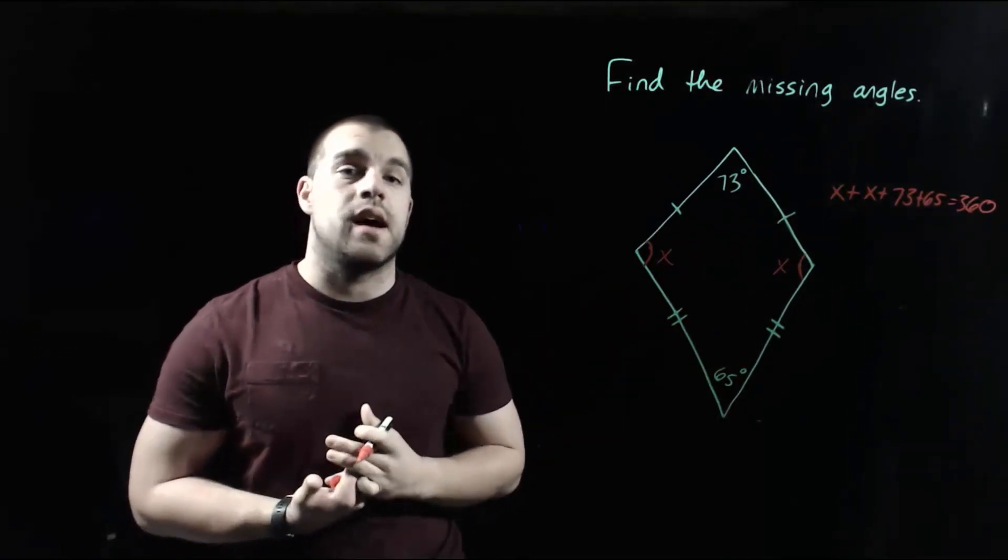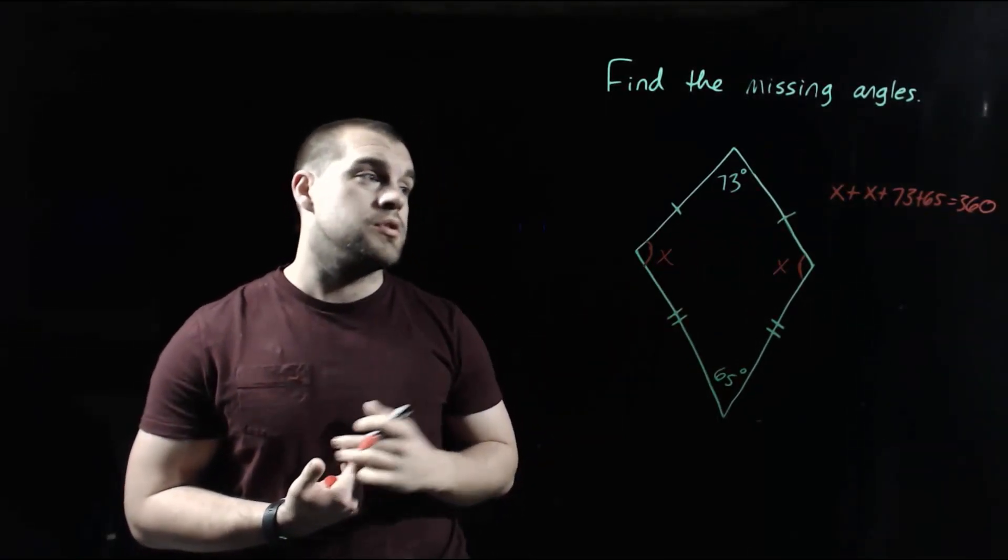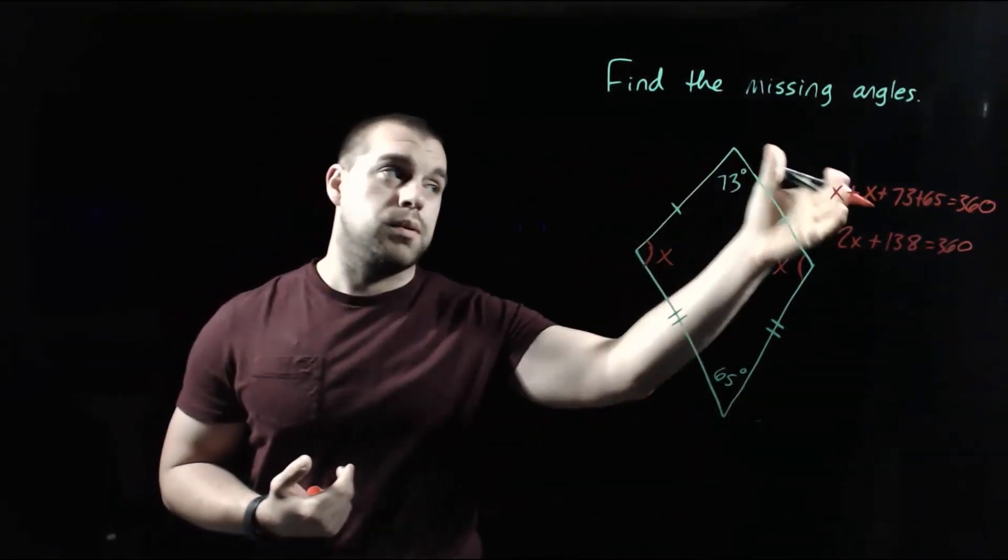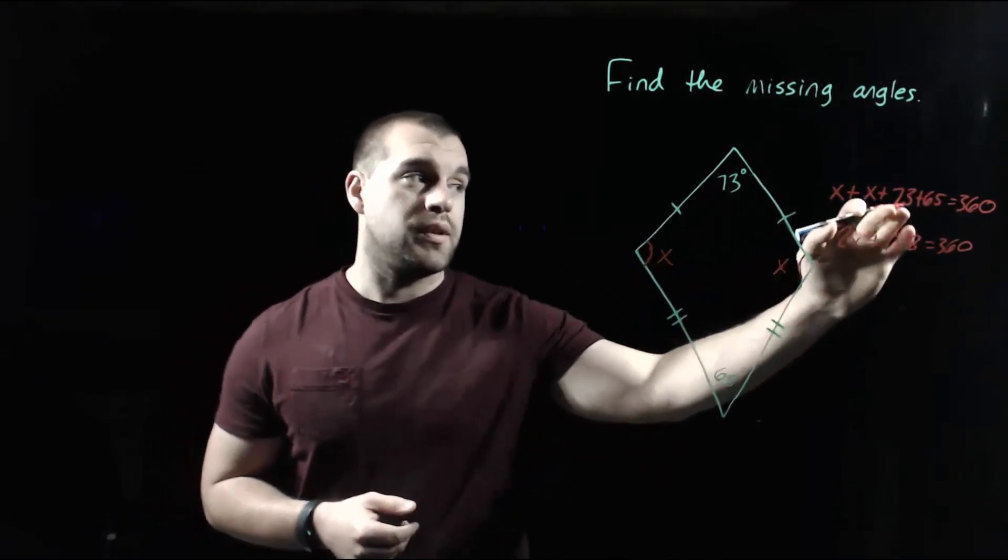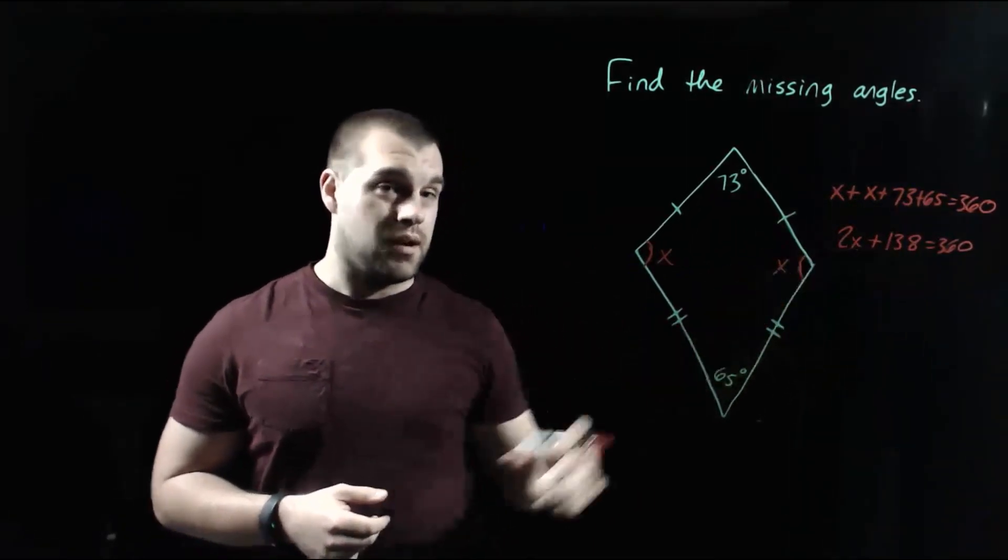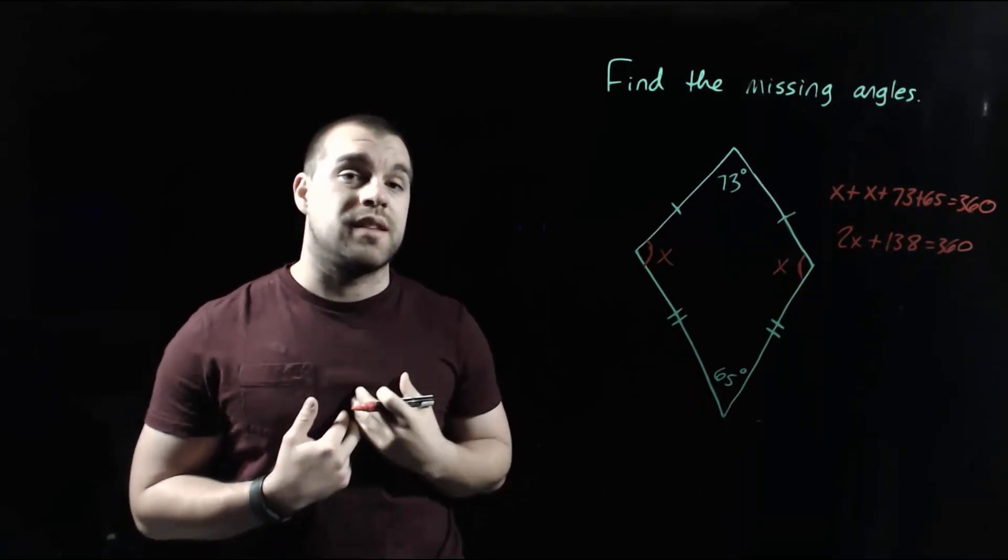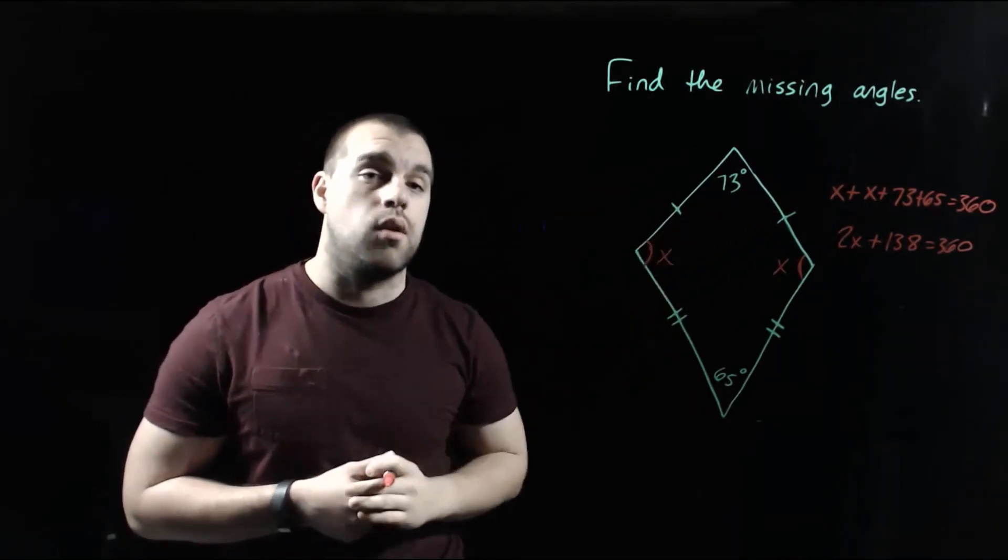What I'm going to do on the left-hand side is I'm going to combine like terms. If we take x plus x, we get 2x, and if we take 73 plus 65, we get 138 equals 360. Now what I'm going to do is I'm going to take that 138 and subtract it over to the right-hand side.